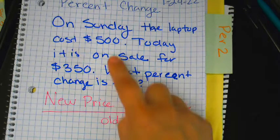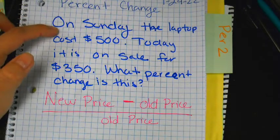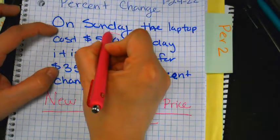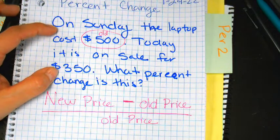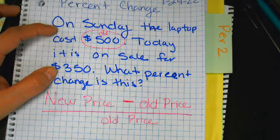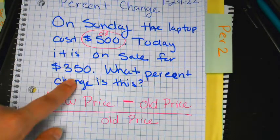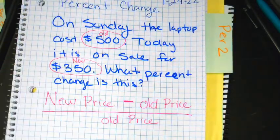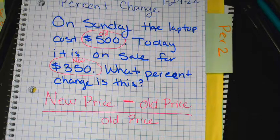So, the $500, is that an old price or the new price? Old, on Sunday. So, Sunday already passed, right? So, let's circle that, and let's write an old in that circle. $500 represents your old price. This is very important. You have to be able to recognize what's new, what's old. Alright. So, today, it is on sale for $350. So, $350 would be considered your new price. So, let's circle that, and write the word new in your circle.